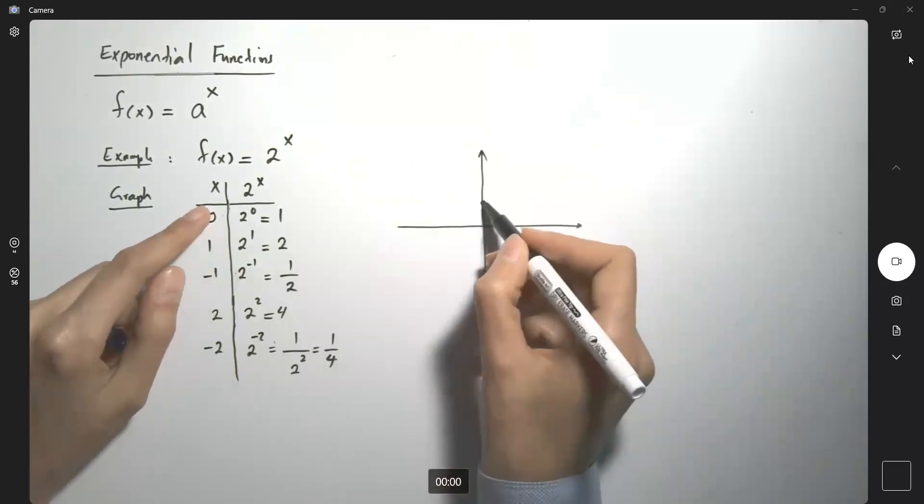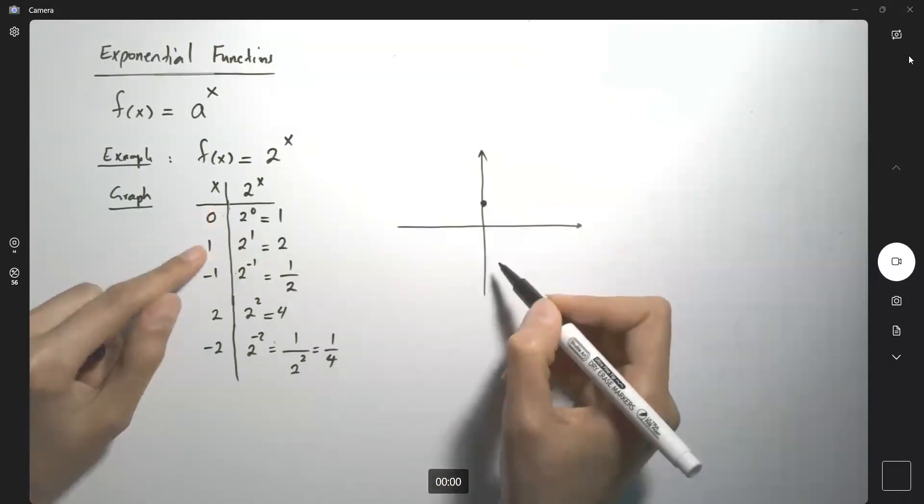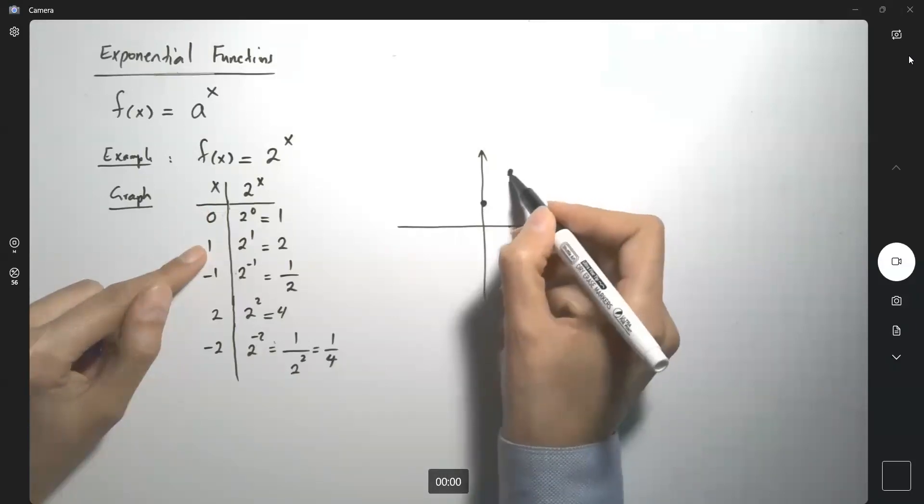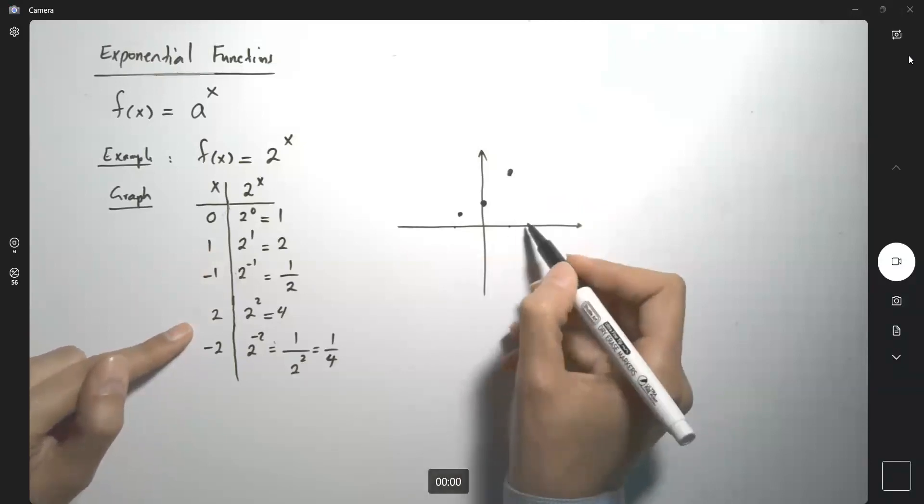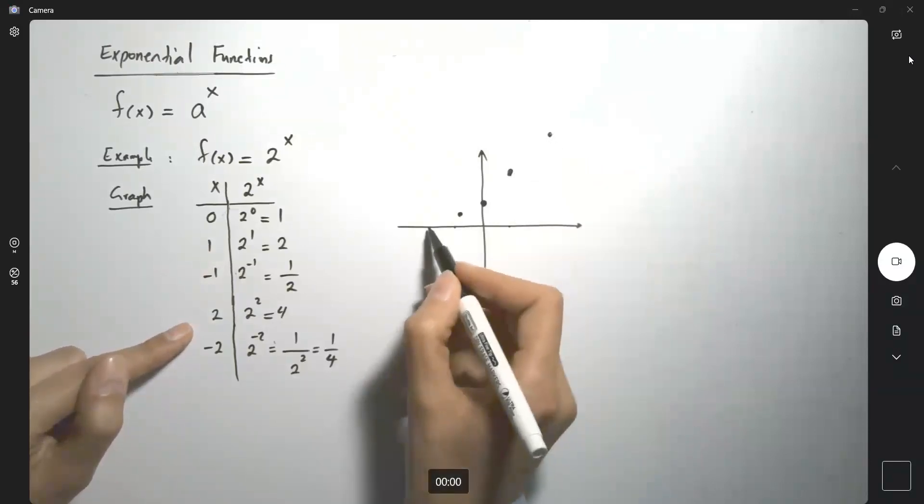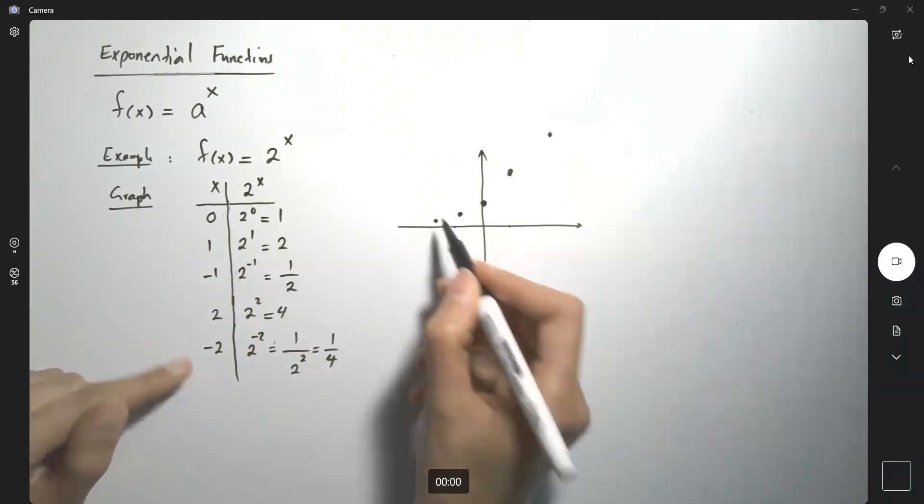So you have 0 and 1, then you have 1 and 2, negative 1 and a half, 2 and 4, negative 2 and one-fourth.